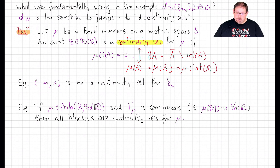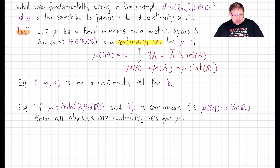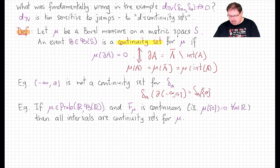We can equivalently call a set A a continuity set if the measure of A equals the measure of its closure equals the measure of its interior. The issue with total variation distance had to do with the fact that the interval (-inf, a] is not a continuity set for the point mass at a. Indeed, the point mass at the boundary of that interval — the singleton {a} — is 1, not 0.